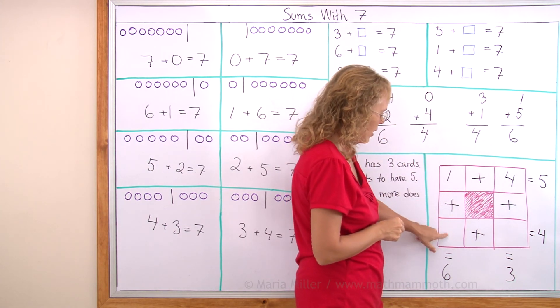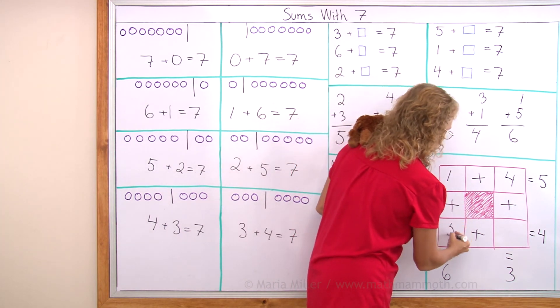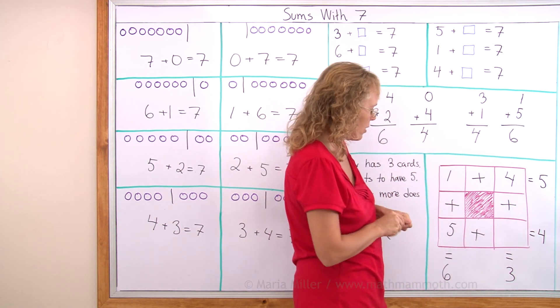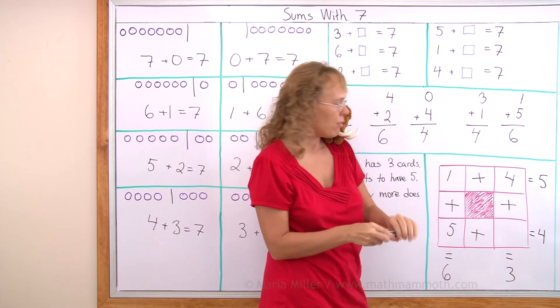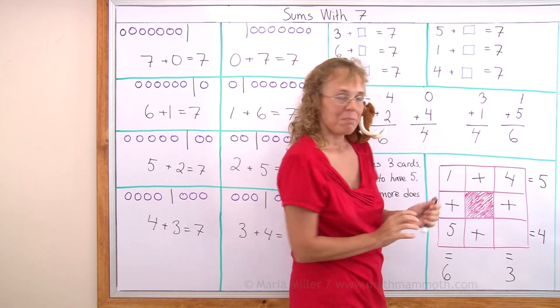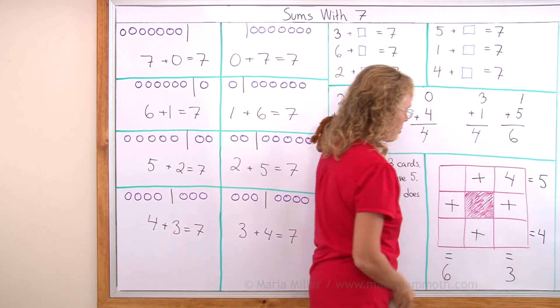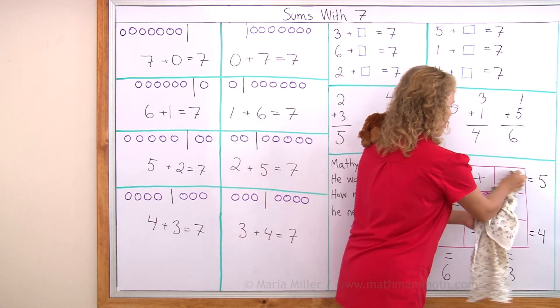Then one plus how many makes six. Okay, I can put five here. Then five plus how many makes four. If you have five, you cannot add any to it to make four. So now I notice this won't work. So I'll erase it. My problem is this number here. This four is too much. Four plus how many makes three. That won't work.